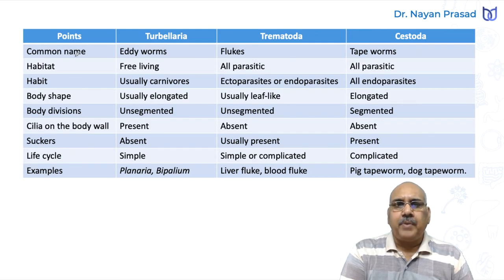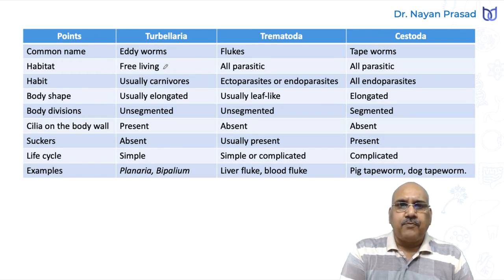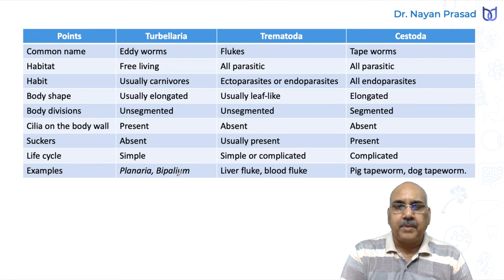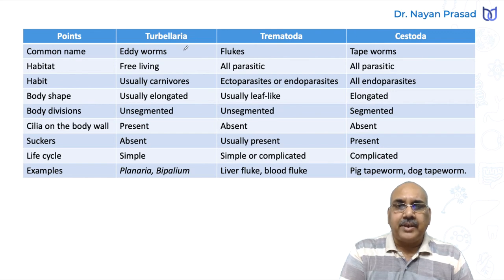For Turbellaria: common name - eddy worms; they are free living and usually carnivores. Body shape usually elongated; body division unsegmented; cilia on the body present; suckers absent; life cycle simple. Examples: Planaria and Bipallium - remember these two are free living.